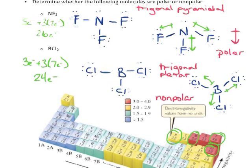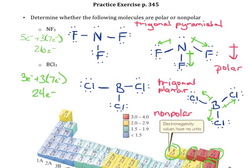When you do these problems, there are a few steps you need to go through. First, count up your valence electrons and use that to draw a Lewis structure. Think about the geometry and redraw your Lewis structure to more accurately reflect that geometry. Then check your electronegativity values, determine if you have any bond dipoles, and figure out if those bond dipoles will cancel in three-dimensional space. If they cancel, you've got a nonpolar molecule. If they do not cancel, you should be able to draw an overall dipole, meaning you've got a polar molecule.